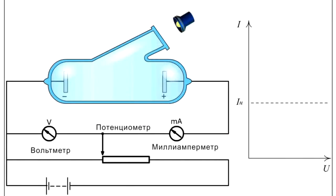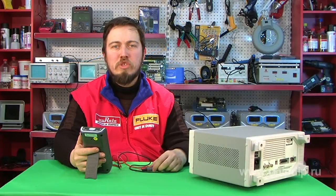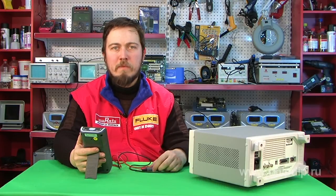For these experiments, Stoletov used a two-electrode vacuum gas bulb. The light, also ultraviolet radiation, gets into the cathode through the quartz glass. The voltage between the electrodes can be regulated by a potentiometer. The passing current was measured by a milliampere meter.